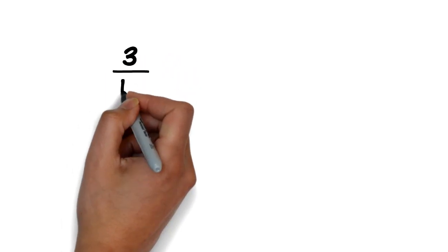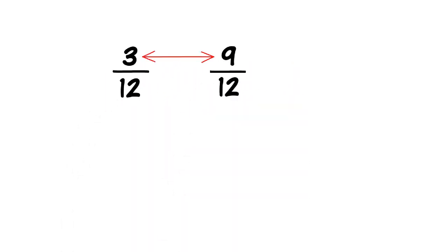So we can see that 3 over 12 and 9 over 12 are complements of each other since 3 and 9 add up together to make 12. So they kind of complete each other.